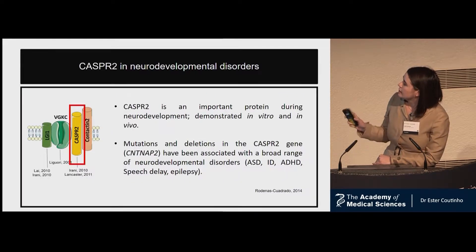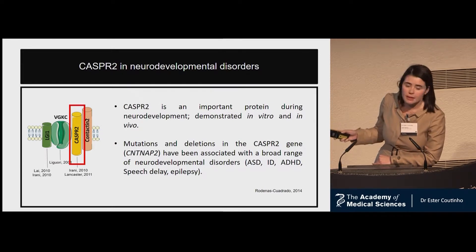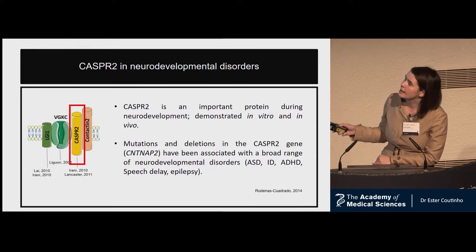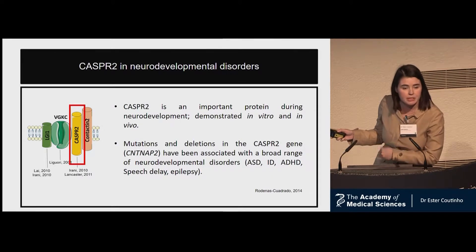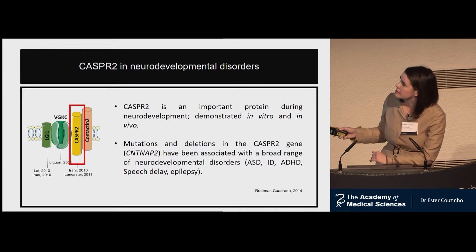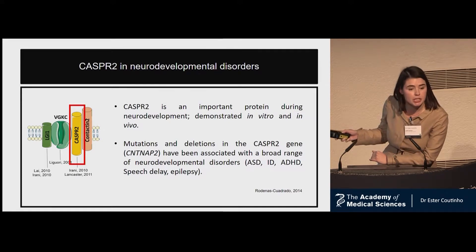In this talk, I will focus on CASPR2. CASPR2 is a protein that is part of the voltage-gated potassium channel complex, and it is a very important protein during neurodevelopment, as demonstrated in vitro and in vivo. Patients with mutations and deletions in this gene have a wide range of neurodevelopmental disorders, such as autism or intellectual disability.